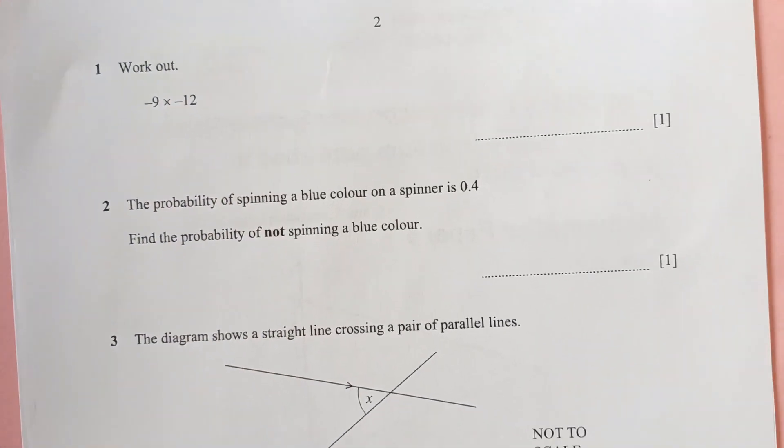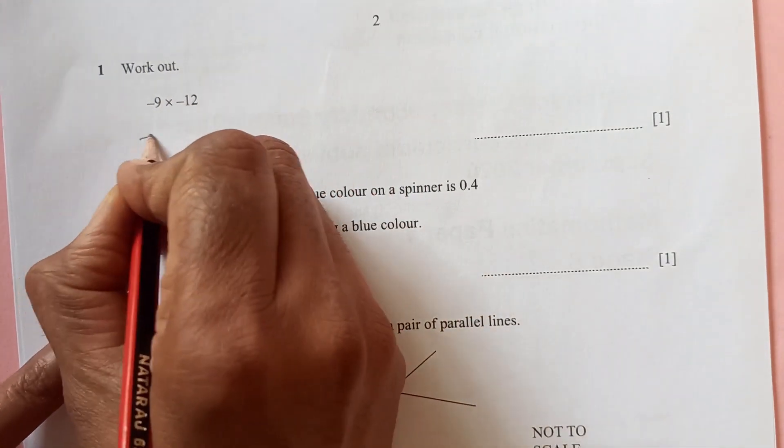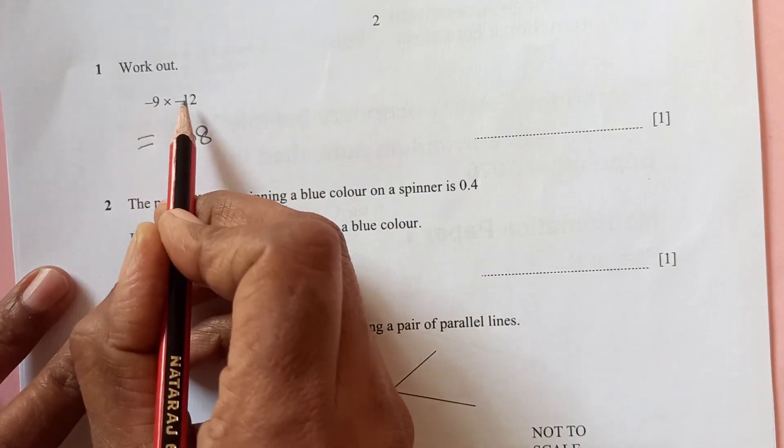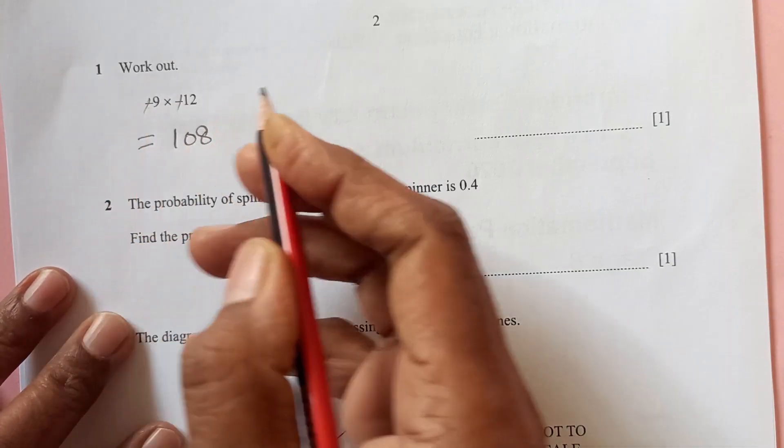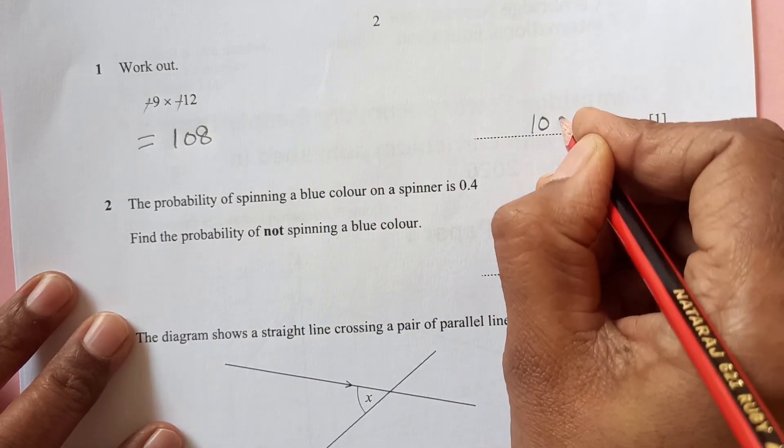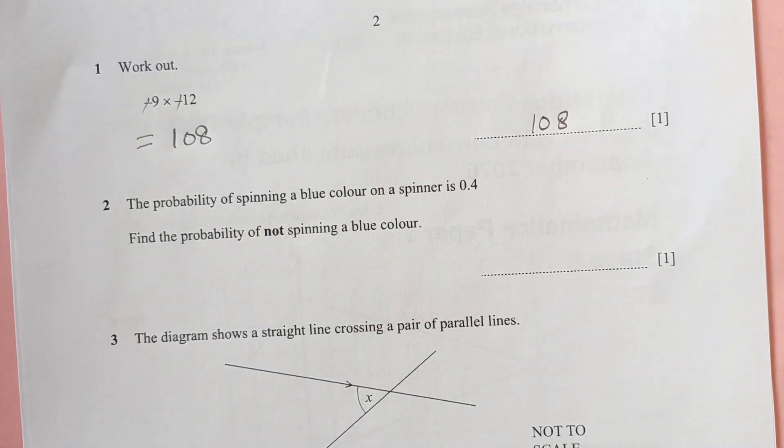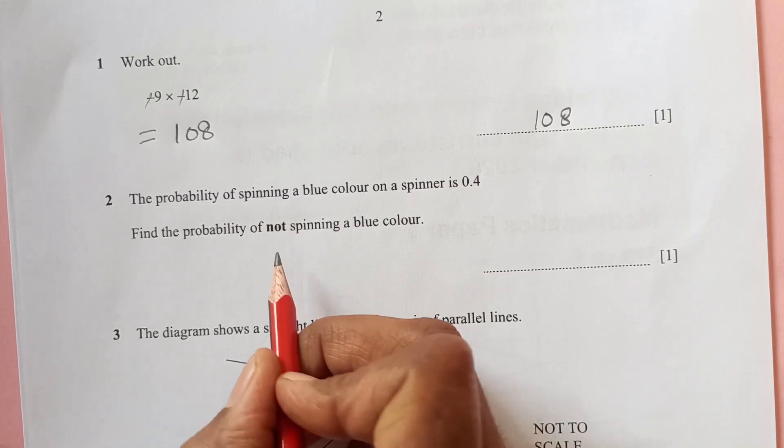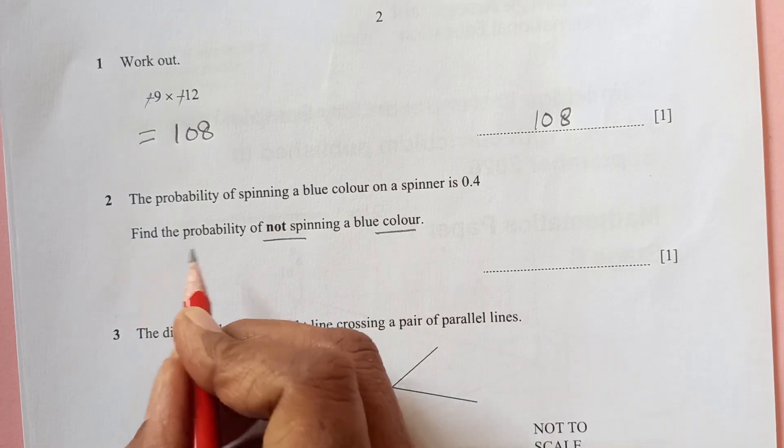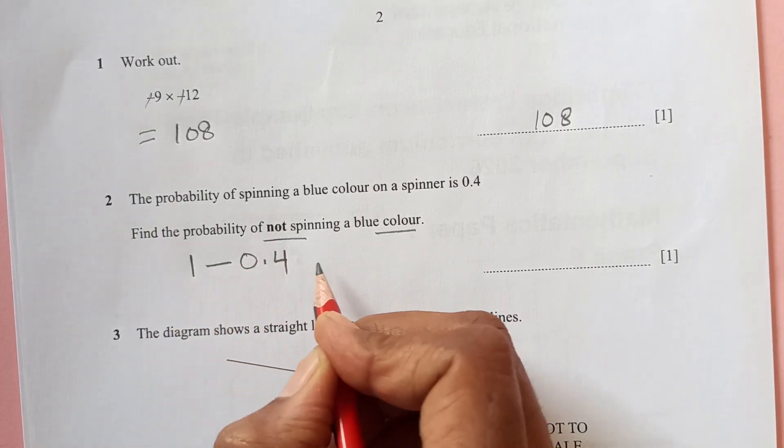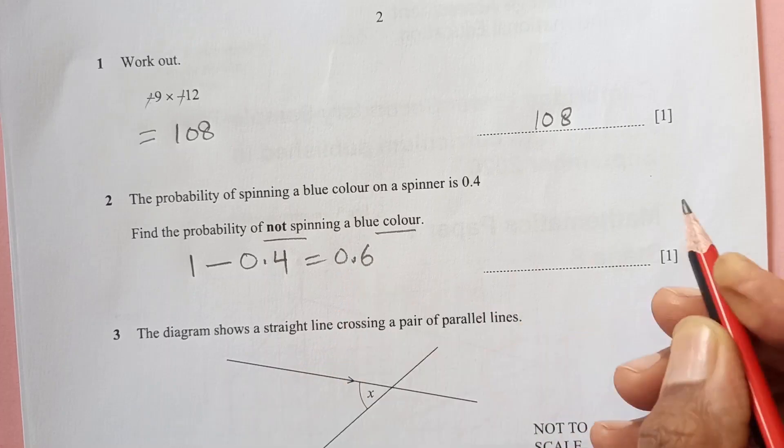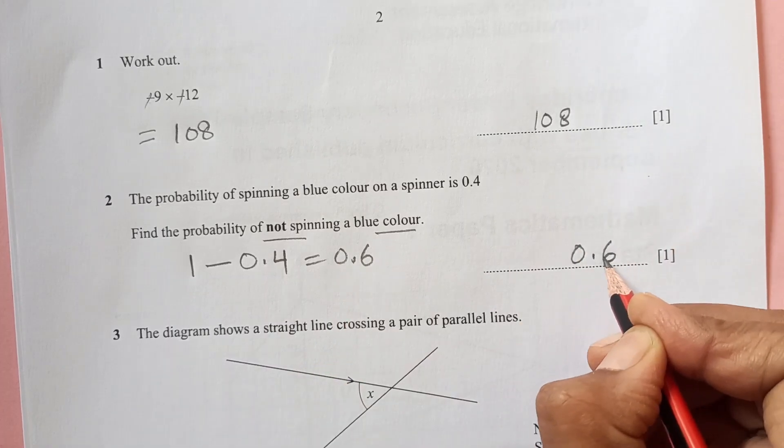First question: 12 times 9 is 108, so minus and minus will get cancelled and your answer will be positive. Second question: the probability of spinning a blue color on spinner is 0.4. Find the probability of not spinning the blue color. So this is 1 minus 0.4, that will be 0.6.